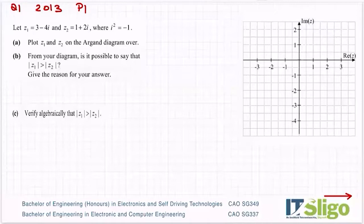2013 question. Let z1 equal 3 minus 4i and z2 equal 1 plus 2i where i squared is minus 1. Plot z1 and z2 on the Argand diagram.